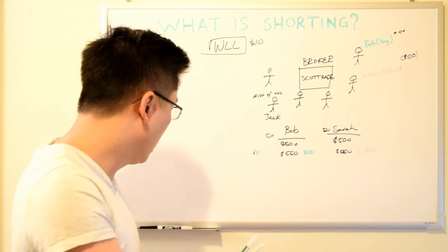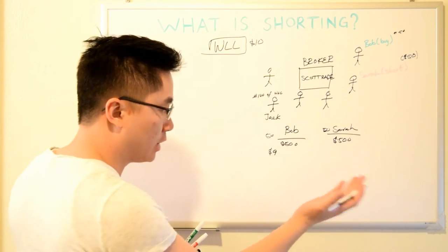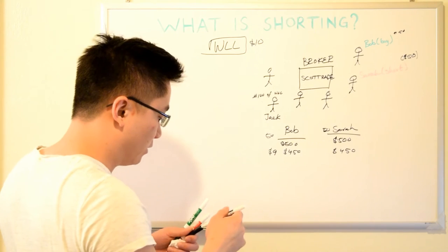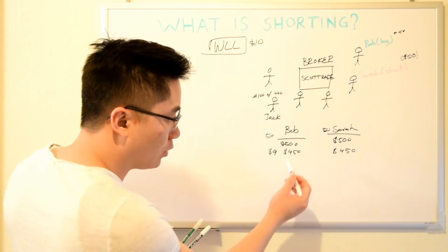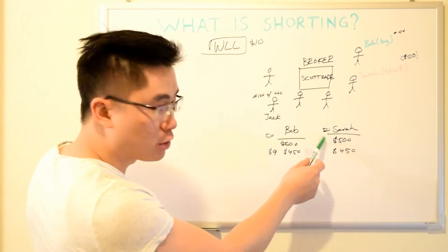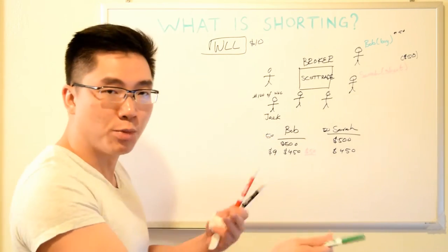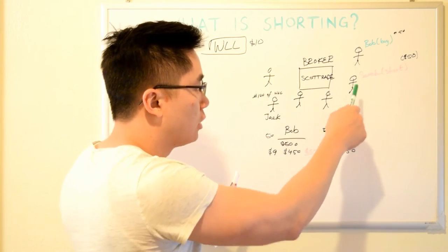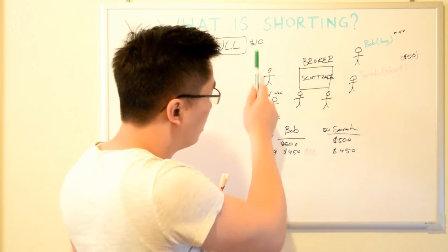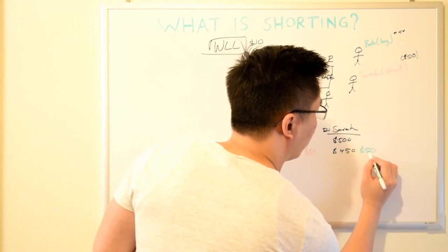Now let's look at $9 per share - 9 times 50 shares is $450. Bob bought at $500, sells at $450, and loses $50. For Sarah: she shorted and sold at $500. When she buys back to return to Jack - because she's borrowing shares she never actually owned, from within Scottrade's network - the price dropped from $10 to $9, so she only has to pay $450 to buy them back. The difference is $50 - that's her gain.